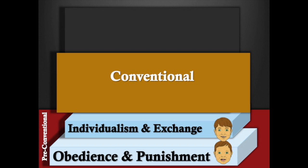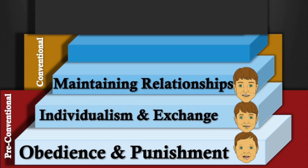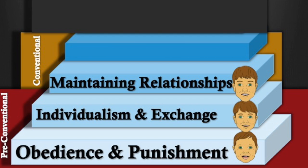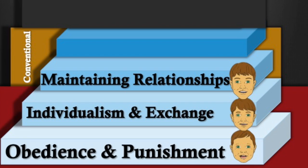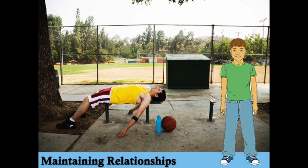Level two: the conventional morality level, consisting of stage three and stage four. Stage three: maintaining relationships. At this stage, individuals emphasize the importance of being kind to other people, engaging in good behavior and showing concern for others, with a strong emphasis on gaining the approval of others. Bobby is walking home after a grueling basketball practice and sees an exhausted athlete, Carlos, sitting by the gym waiting for a ride. Bobby invites Carlos to wait at his house, which is two houses down, and offers to have dinner with them. Here, Bobby is maintaining a good relationship with a friend.